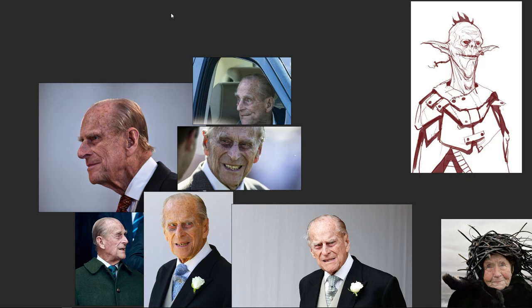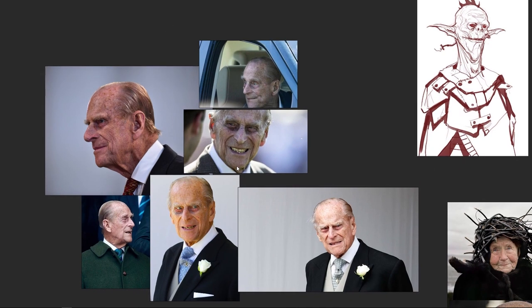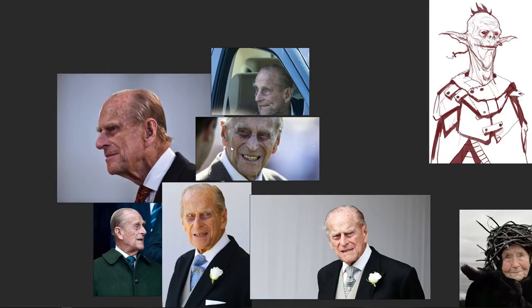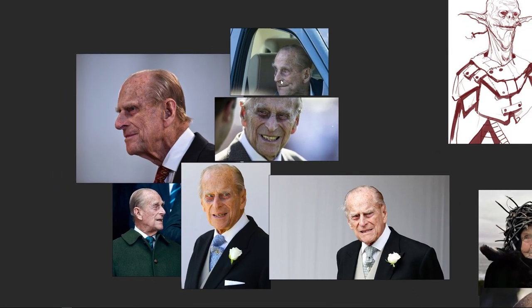The first thing we start off with is to actually collect the reference. You can collect this from any source, it doesn't really matter. What's important is that you are sticking to a select few pieces of reference. In our case we are using Prince Philip of the UK because he is scary - a scary royal, which means he's perfect for this kind of stuff. We want to make a creature and find something as close as possible. He's pretty creature-like. Give this guy some scary ears and he is essentially there - the perfect sort of devil character.